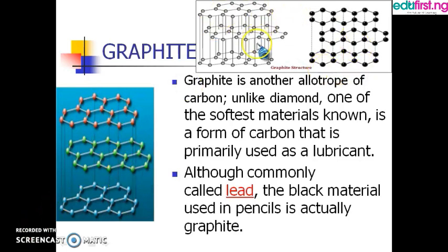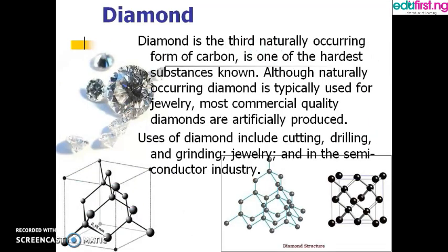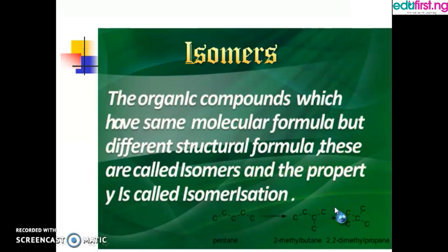The next allotrope is diamond. Diamond is the third form of carbon and it is the hardest known substance. That is why only diamond is used to cut diamond — we use diamond to cut other hard materials as well. Among the uses of diamond are cutting, drilling, grinding, jewellery, and the semiconductor industry. This is also the structure of diamond.